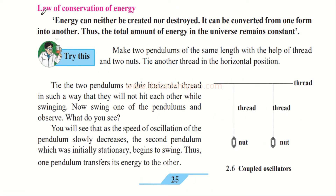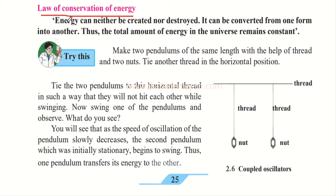The next topic is the Law of Conservation of Energy. Energy can neither be created nor destroyed, but it can be converted from one form into another. Thus the total amount of energy in the universe remains constant. This is a very important law — no matter what type of energy it is, it can never be created from scratch or destroyed. You can convert energy but you cannot create or destroy it, so the total amount of energy in the universe is always a fixed amount.